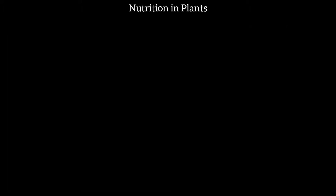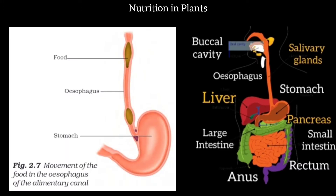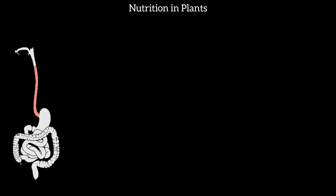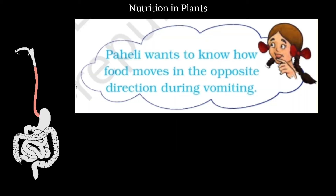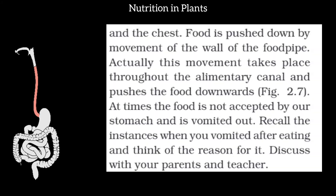After the mouth, food enters the food pipe, which we call the esophagus. Whatever we eat from our mouth travels through the esophagus to our stomach. Normally food travels downward through the esophagus.